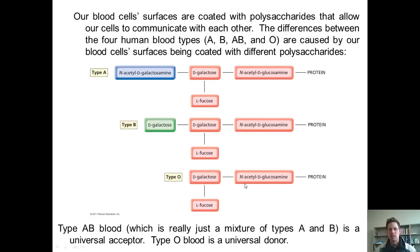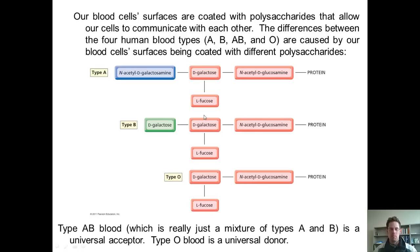Anyone who has type AB blood has cells coated with all the sugars seen in type A and all the sugars seen in type B. That means someone who has type AB blood is a universal acceptor. They can receive blood from someone with type A and their blood cells will recognize that sugar on the surface, and they can receive blood from type B as well, because people with type AB blood have both type A and type B sugar patterns on the surfaces of their cells.